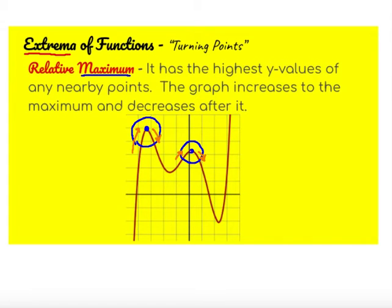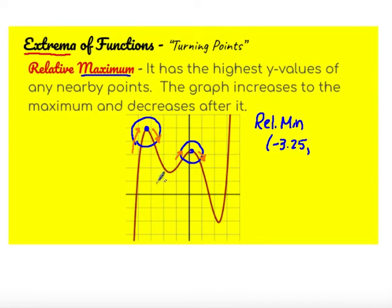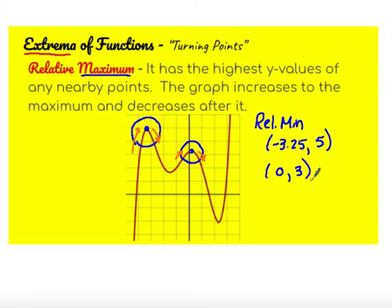So these values are called the relative maximum. If I have to list those values, the first is at about negative 3 and a quarter on the x-axis, going up to about 5 on the y-axis — so a relative maximum at approximately (−3.25, 5). And there's also a relative maximum at about (0, 3). Those are just rough estimates of where those points are located — and those are our maximums.